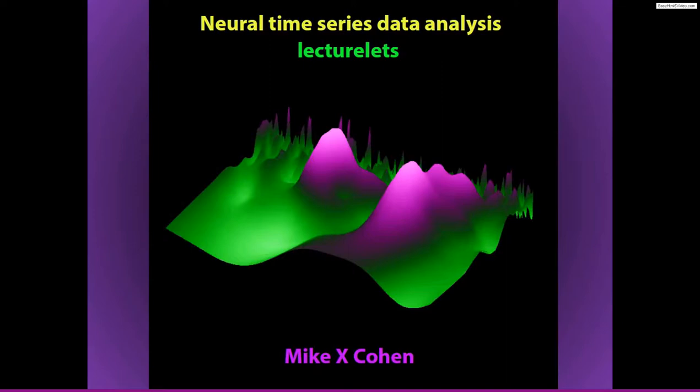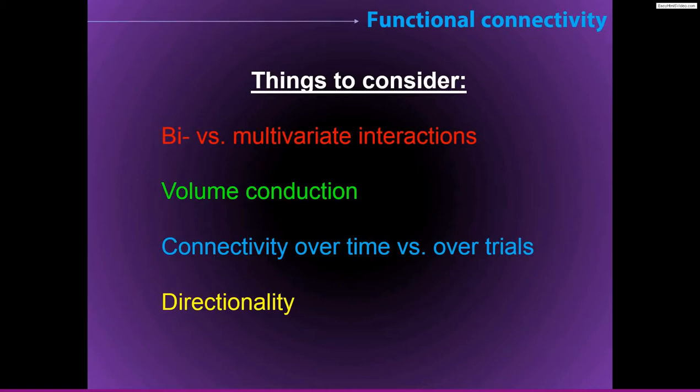I want to start this section with a separate lecture that's not really about connectivity methods per se, but about highlighting a few things related to connectivity that you should keep in mind — in particular, four things. These are not all necessarily big problems or potential confounds that you need to worry about. These are more things that you need to consider when you are doing connectivity analyses on your data or when you are interpreting connectivity results that you see in papers or talks.